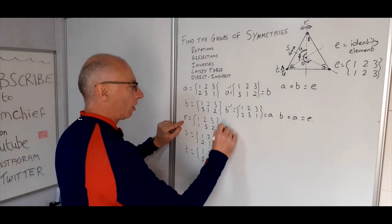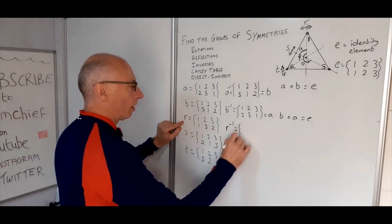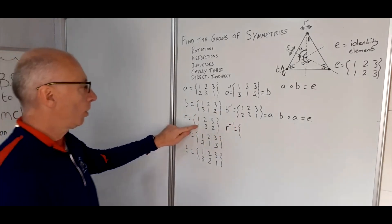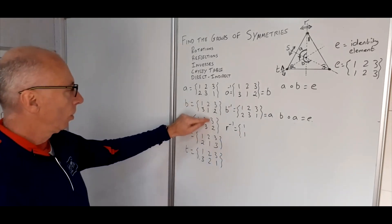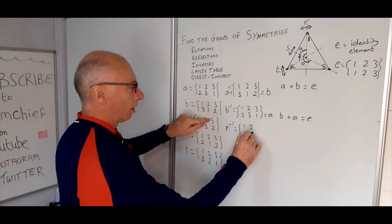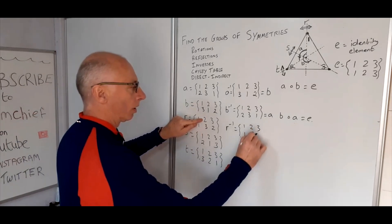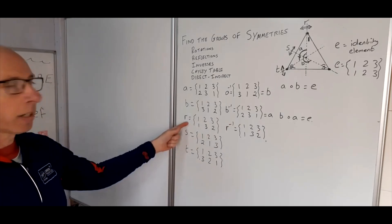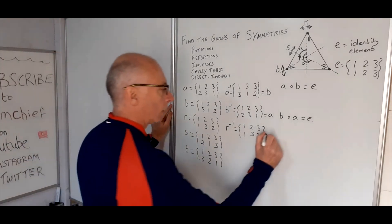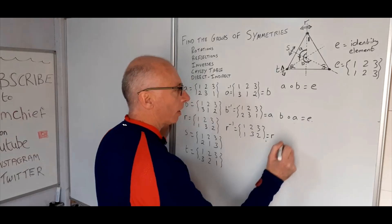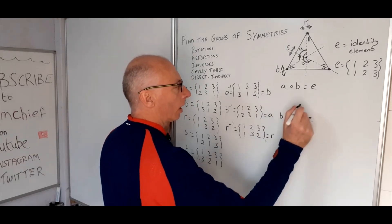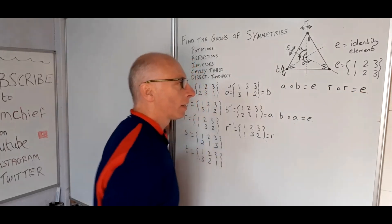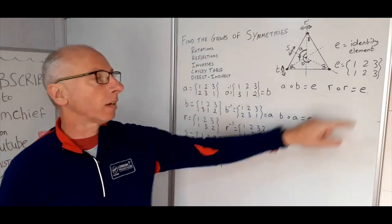Now what about R — the inverse of R? Using the upside-down method: one and one stay as they are, two will go to three, and three will go to two. So which group does that make? That makes R itself. So R composite R is the identity — this one is self-inverse.